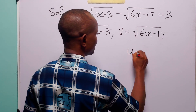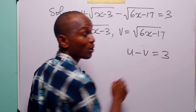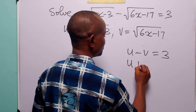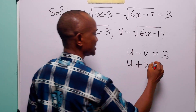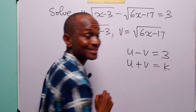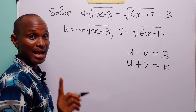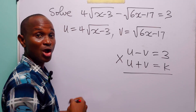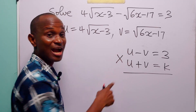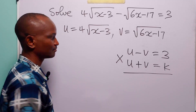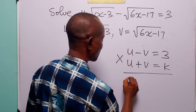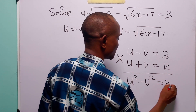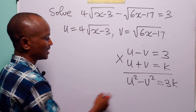Now what we are going to do is assume that u plus v — the conjugate of this — is equal to a constant k, and we are going to find that constant. We multiply these two equations together. You know that multiplying them gives the difference of two squares, so u+v times u-v equals u² minus v², and this equals 3 times k.